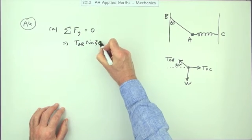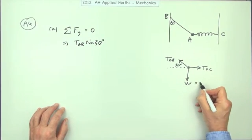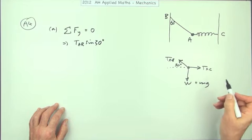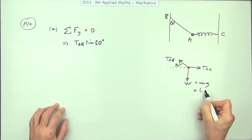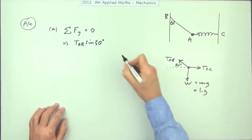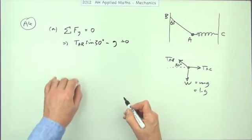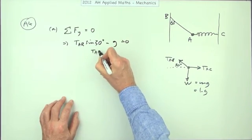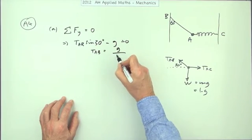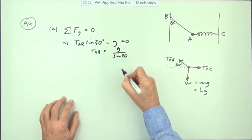The weight, which is mg, but the mass was just one, so that's just g, so I'll just put that one times g. It's heading down the way, so that'll be minus g should come to zero. So that gives you then TAB is going to be g over sine 30.